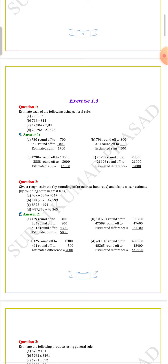Question D: 28,292 rounds off to 28,000 because 292 is nearest to 28,000, as 29,000 is farther away. The next number, 21,496, rounds off to 21,000. The estimated difference equals 7,000.